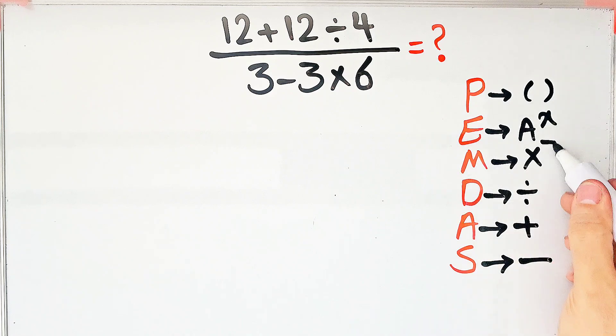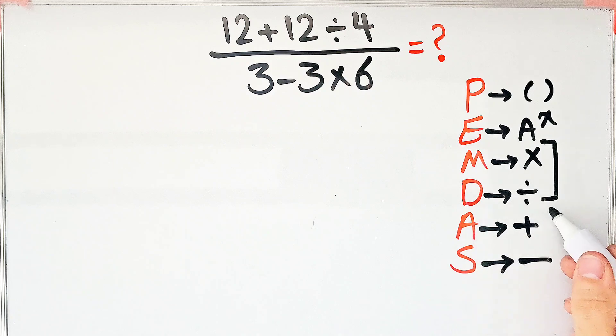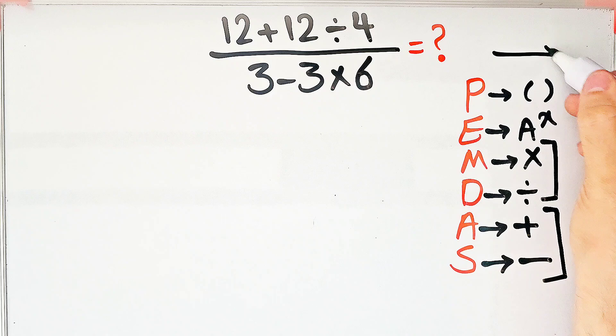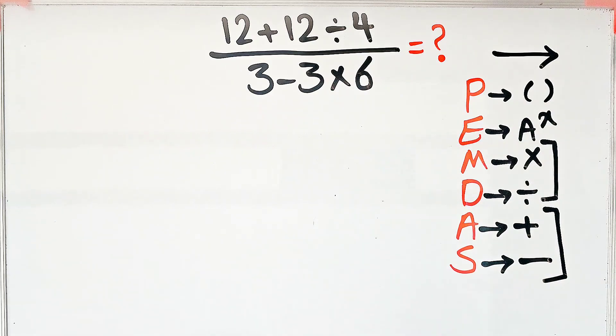Multiplication and division have the same level of priority. Also, addition and subtraction have the same priority. When we have both in an expression, we start from the left and simplify the question.